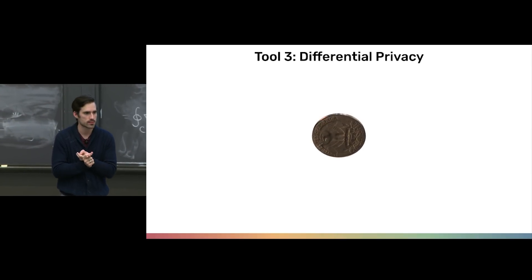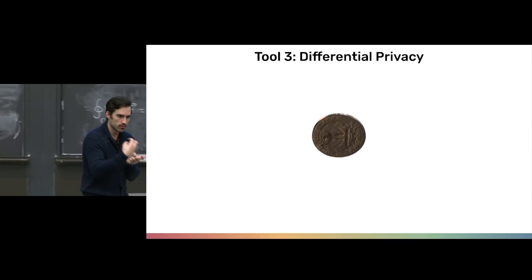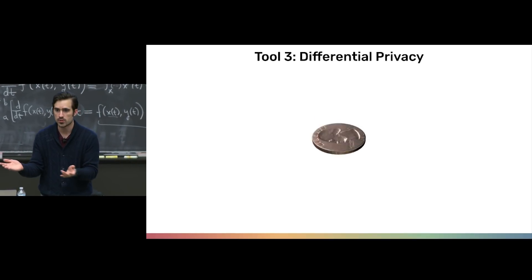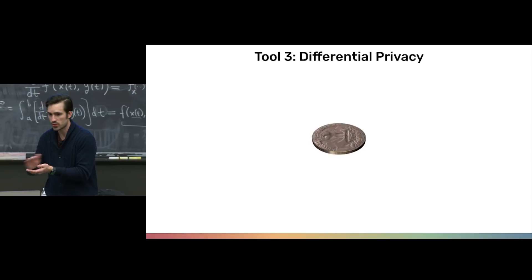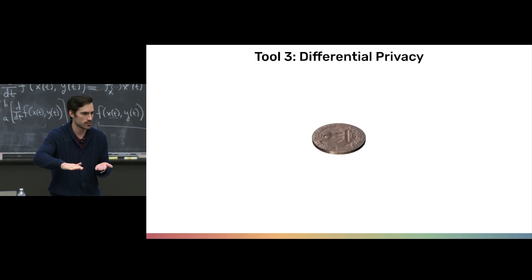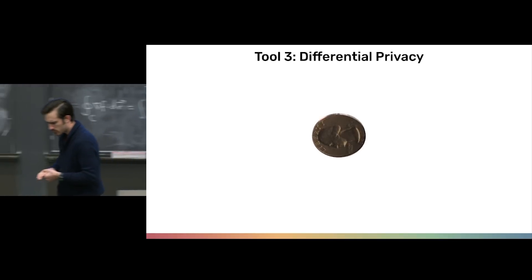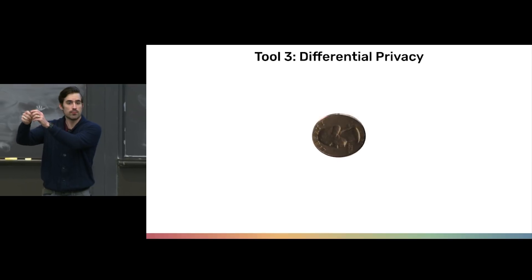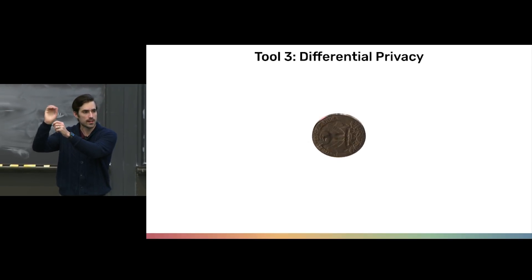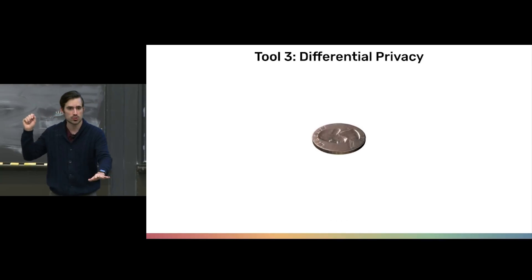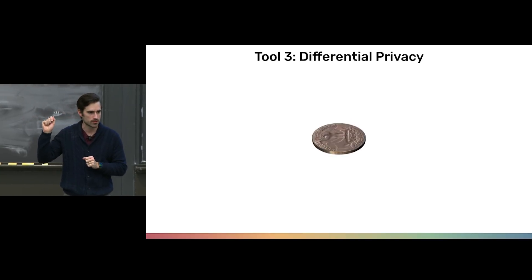A few terms you should be familiar with: local and global differential privacy. Local differential privacy adds noise to data before it's sent to the statistician — the coin flip example was local differential privacy. It affords the best protection because you never actually reveal your information in the clear. Global differential privacy says: okay, put everything in the database, perform a query, and then before the output gets published, add a little bit of noise to it. This tends to have a much better privacy trade-off, but you have to trust the database owner not to compromise the results.